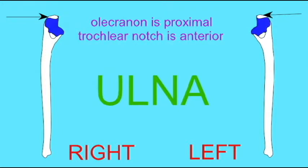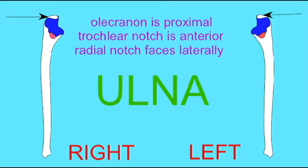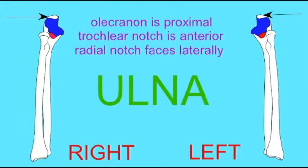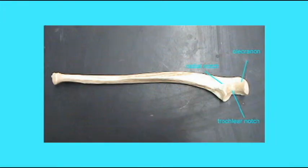The radial notch must face laterally. The ulna is the medial bone — you can feel it going from the olecranon all the way down to its styloid process. You can show yourself that the ulna is the medial bone simply by feeling the ulna of your forearm. The radius must therefore be the lateral bone, and therefore the radial notch, that notch in the ulna into which the radius fits, must face laterally since the radius is the lateral bone.